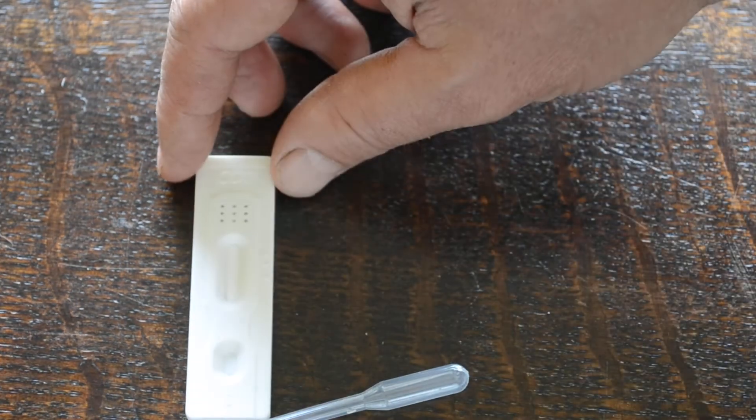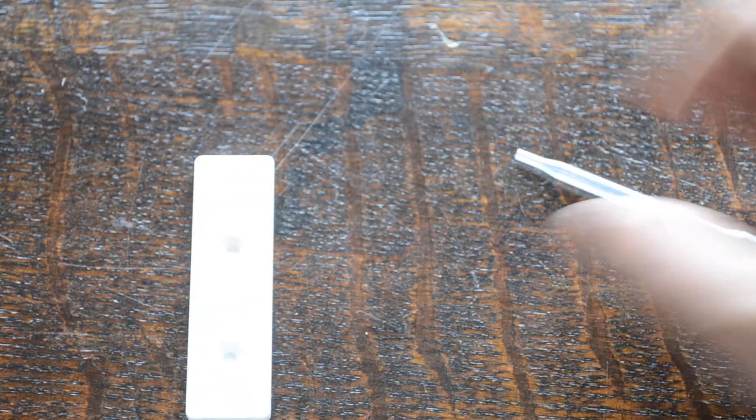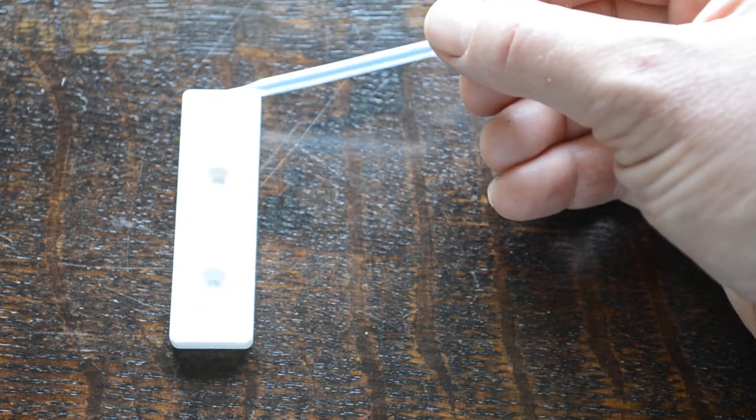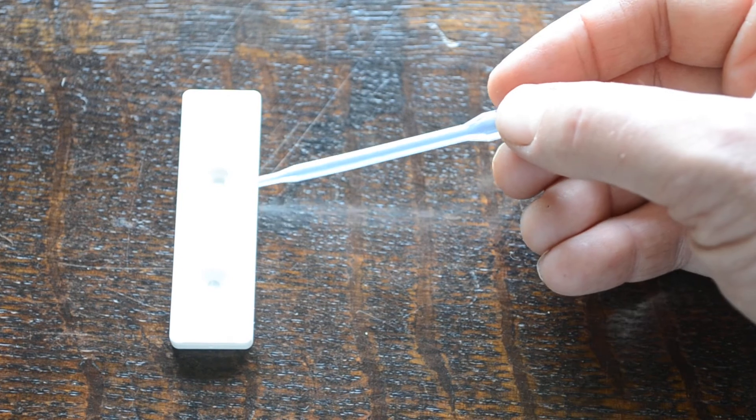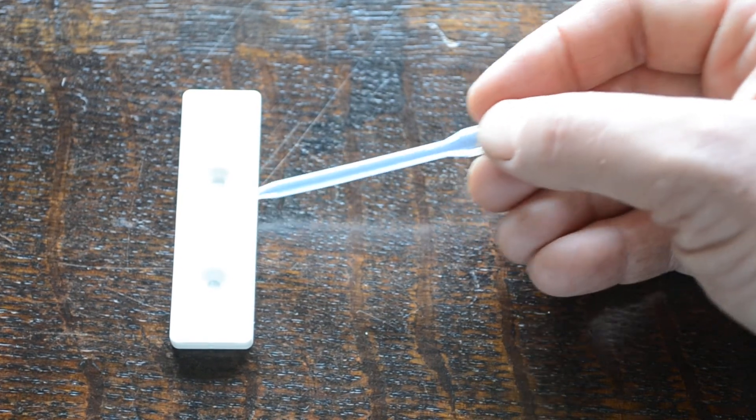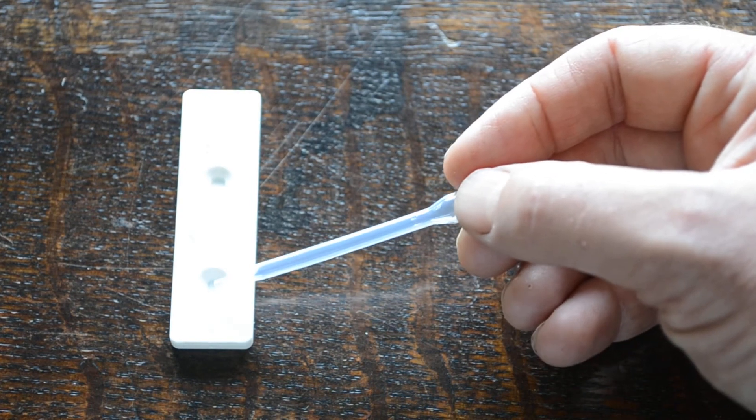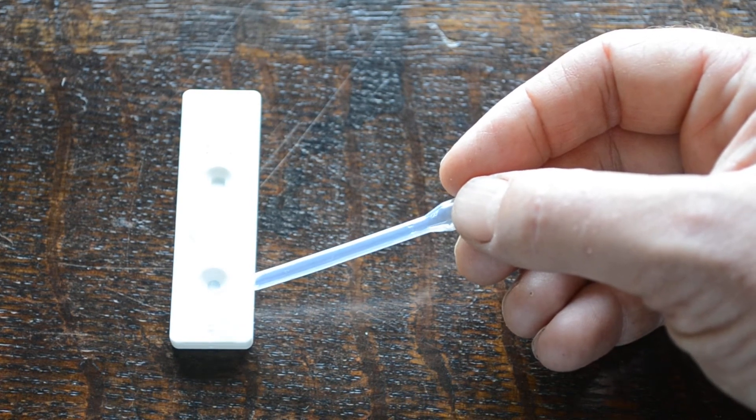And here you have the urine cassette for cotinine. It's labeled on the top here as C-O-T for cotinine. You've got a C line here indicated for a control and the T line for the test, which is your results window. And the S or sample well here, which is where the sample is applied.